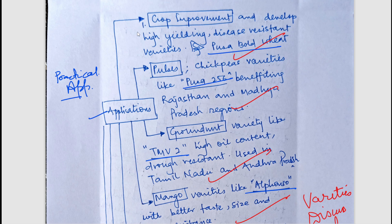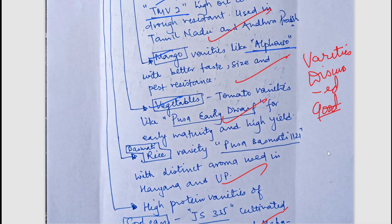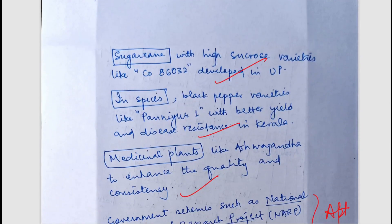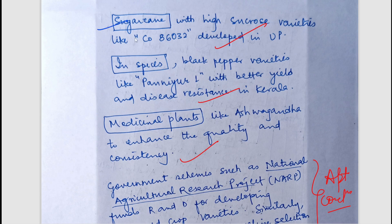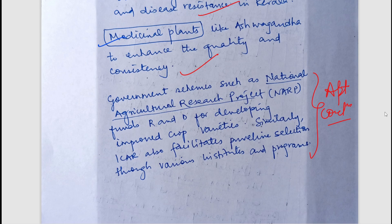Practical applications include use in crop improvement, pulses, groundnut, mango, and vegetables. Varieties such as Basmati rice and JS 335 soybean have been well mentioned. Additional varieties include sugarcane CO86032, and uses in spices and medicinal plants. I was very impressed with this answer because remembering that many varieties and facts is not easy, but the student was able to do so.